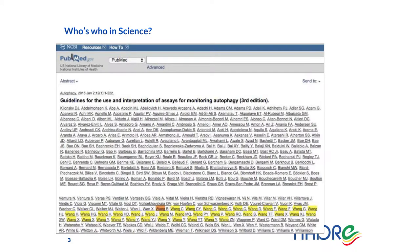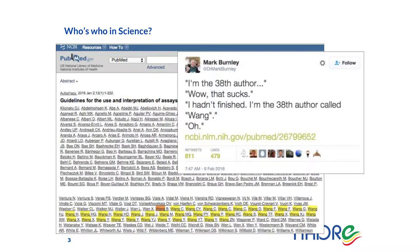When you have big papers published by large collaborations, it's not rare that you have different people with the same name, or the same researcher signing different papers with slightly different names — like first name last name, or last name first name, or last name comma initial of first name. This is a peculiar example where you have lots of people with the same last name and people confused about who's who among the signatories of a paper.